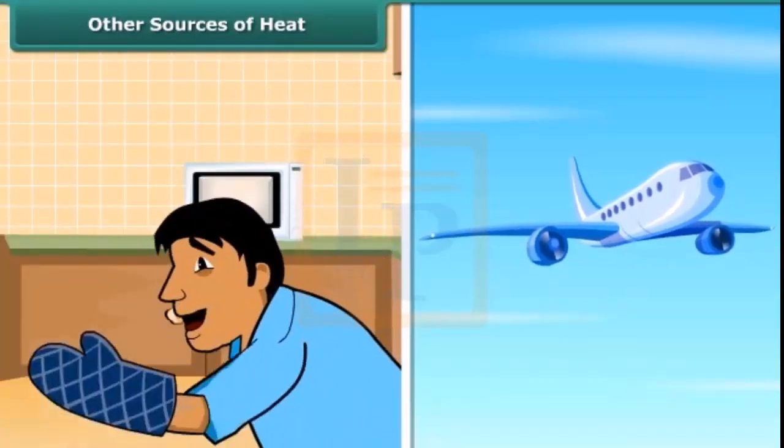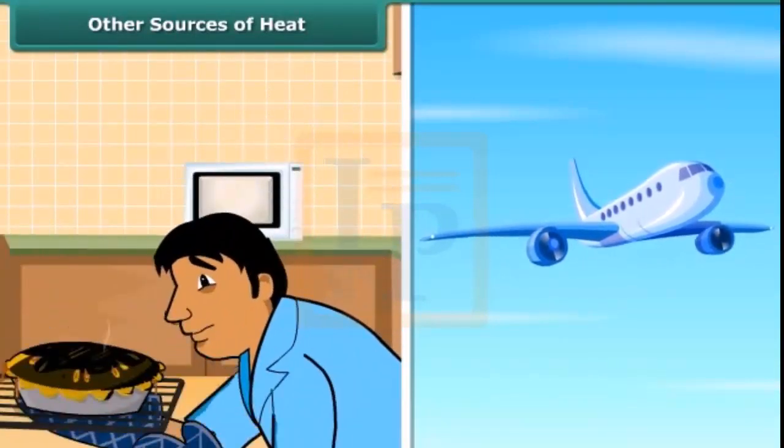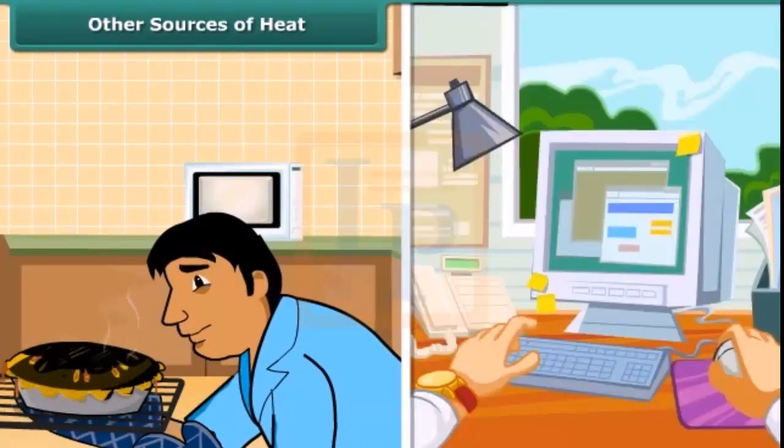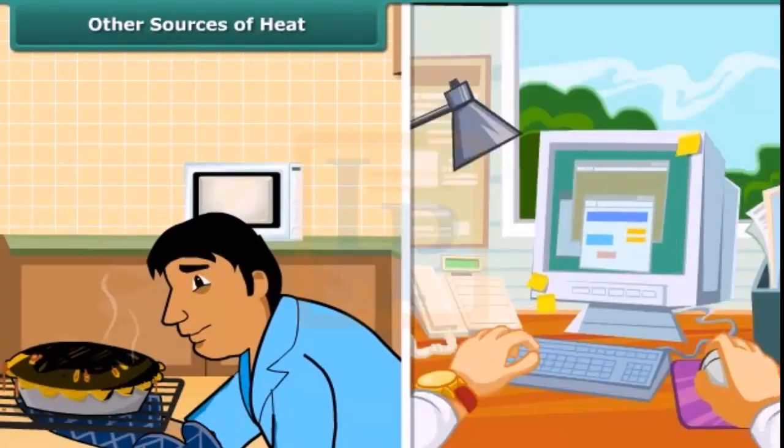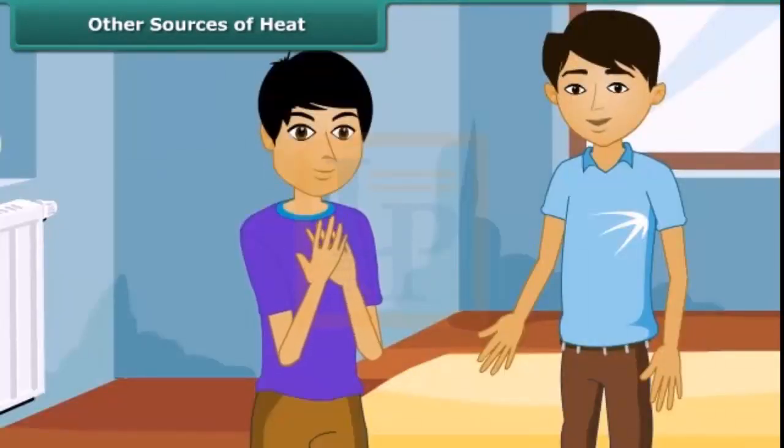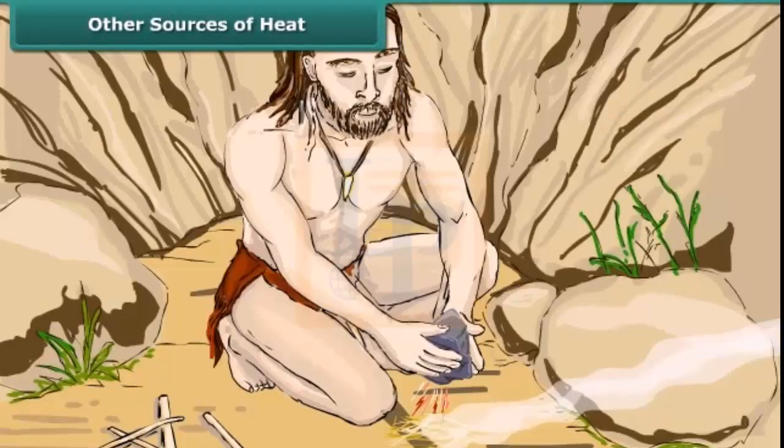Electricity also gets heat. Man uses electricity to cook the food and to work the machines. Heat can also be produced by rubbing two things together. This is by doing mechanical work. Rub the palms of your hands together. What do you feel? You will feel that it is hot. The ancient man generated fire by rubbing two stones.